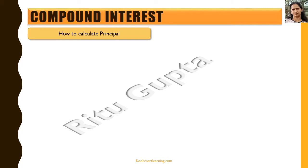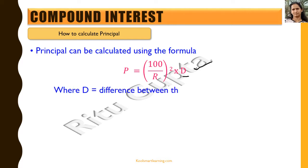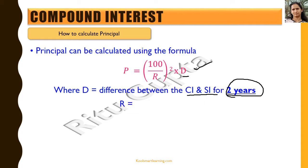Now let's see how do we calculate the principal in case we are given the compound interest and simple interest for 2 years. This is the formula for calculating the principal which is 100 by r whole square into d, where d is the difference between the compound interest and simple interest for 2 years, and r is the rate of interest.